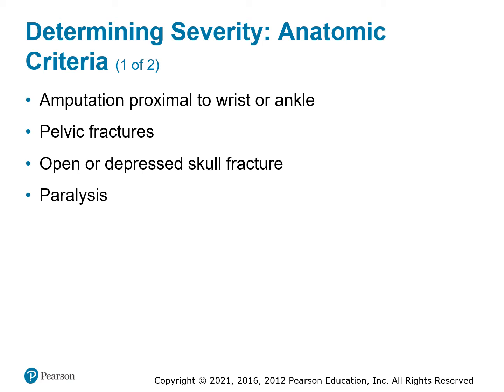Amputations proximal to the wrist or ankle — anything above the wrist or ankle we're going to consider a critical criteria. Pelvic fractures, because of the force required to fracture a pelvis. Open or depressed skull fractures, because the brain is kind of important. We don't know the full extent until we get them to the hospital and have them fully evaluated, so we're going to treat them as a critical patient right away.